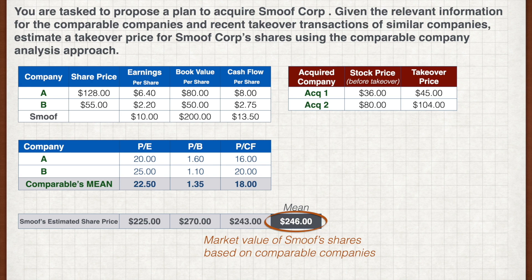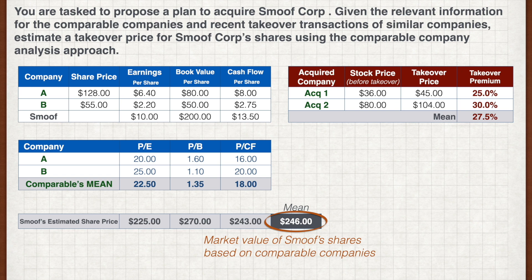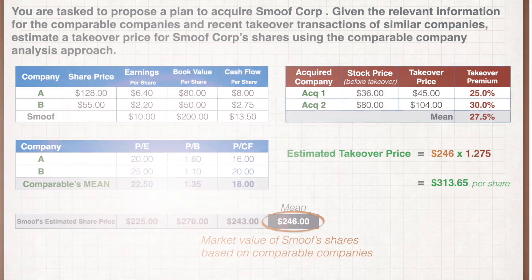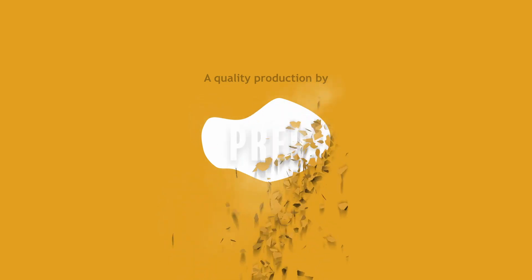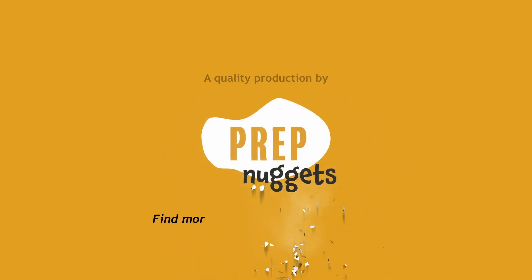This is the market value of SmoothCorp shares based on comparable companies. Next, we calculate the takeover premiums — the two given takeover transactions had 25% and 30% premiums, so the average is 27.5%. Applying this premium to SmoothCorp's estimated share price, we get an estimated takeover price of $313.65 per share.